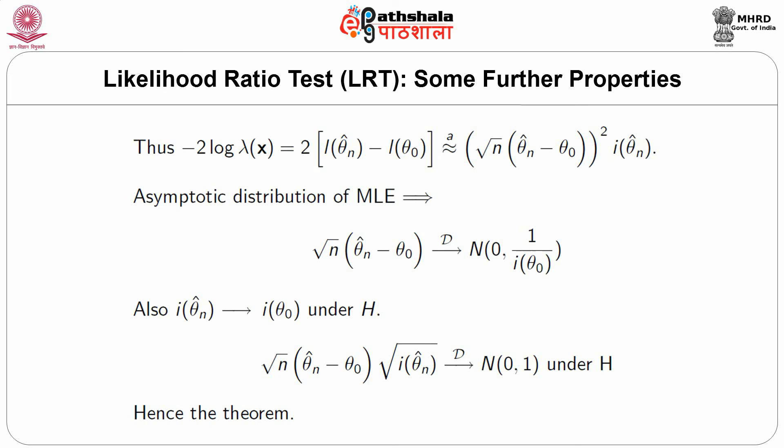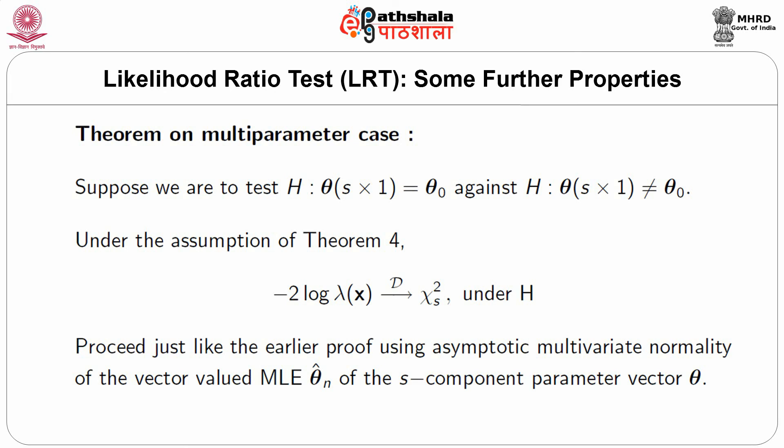Consider another theorem based on the multi-parameter case. Suppose we have to test H: theta_vector = theta_0_vector against K: theta_vector ≠ theta_0_vector. Then under the assumptions of Theorem 4, minus twice log of lambda(X_vector) converges in distribution to chi-square with h degrees of freedom under H.